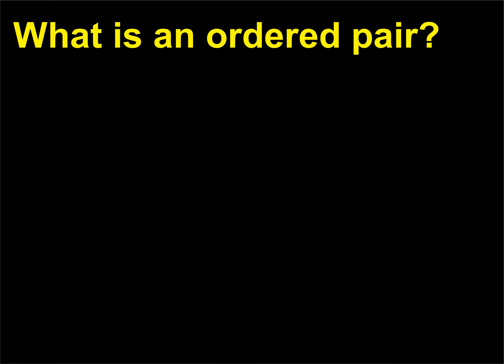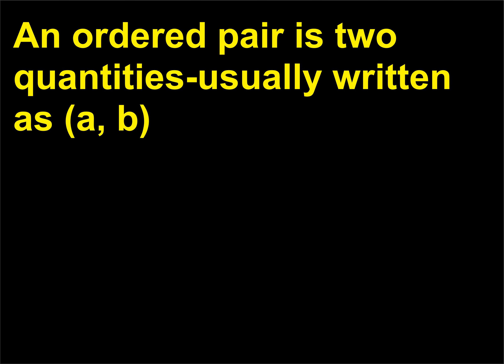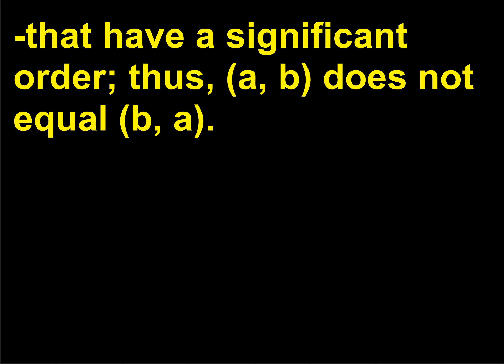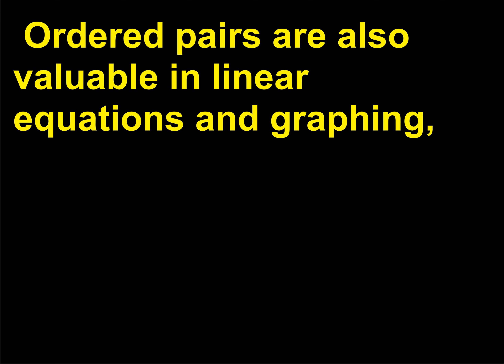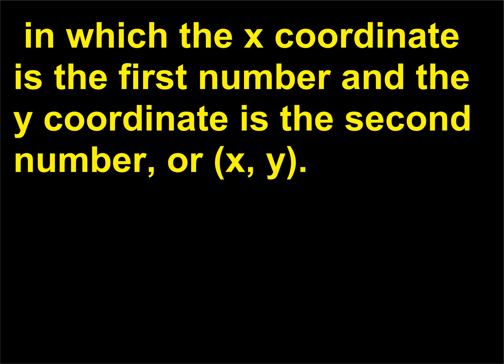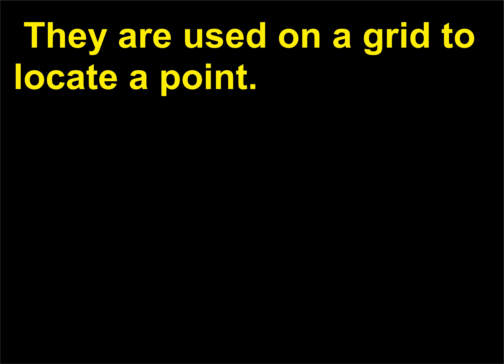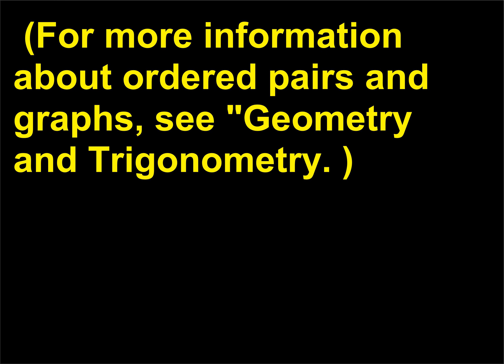What is an ordered pair? An ordered pair is two quantities usually written as (A, B) that have a significant order; thus (A, B) does not equal (B, A). Ordered pairs are used in set theory to define members in a function. Ordered pairs are also valuable in linear equations and graphing, in which the x-coordinate is the first number and the y-coordinate is the second number, or (x, y). They are used on a grid to locate a point. For more information about ordered pairs and graphs, see geometry and trigonometry.